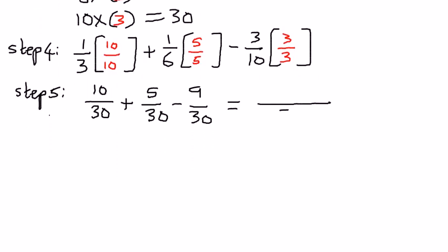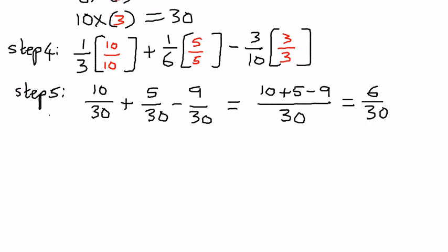The common denominator is 30 for all three fractions. We combine the numerators: 10 plus 5 minus 9. Ten minus 9 is 1, and 1 plus 5 is 6, giving us 6 over 30. We can simplify further: 6 times 1 is 6 and 6 times 5 is 30, so this simplifies to 1 over 5.